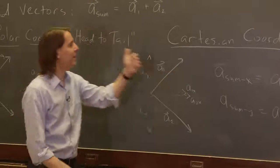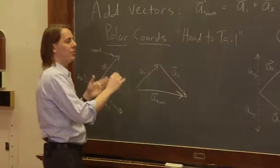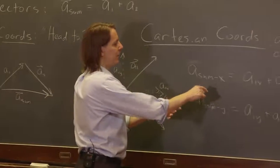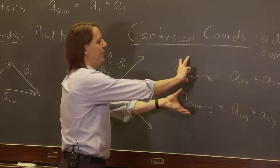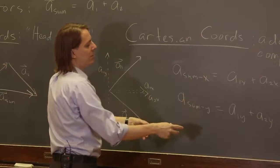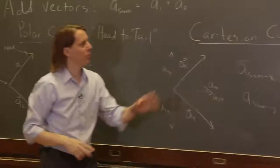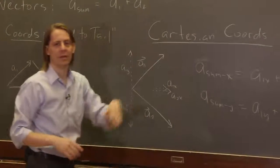And then, if you wanted to go back to polar coordinates, you could. You would just have to do the square root of this squared plus this squared is the magnitude, and the angle is the inverse tangent of this over this. But really, in Cartesian, we just need the two coordinates, and then we have the vector.